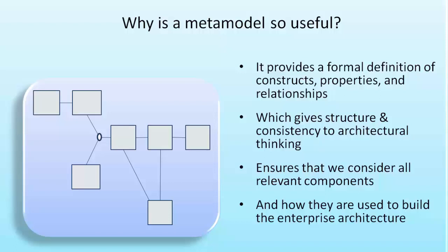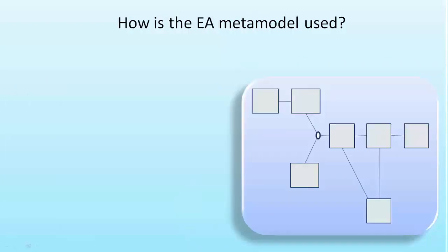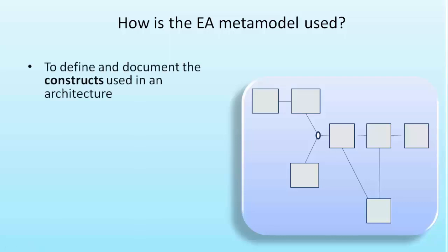The meta model also shows how those components are used to build an enterprise architecture — it shows the allowable ways of configuring and grouping those constructs so that we can create an architecture. Once we've got an enterprise architecture meta model, how do we actually use it? Firstly, we use it to define and document the constructs that we're going to need and use in the enterprise architecture. Any type of construct, any type of relationship that we need in the architecture should be documented in the enterprise architecture meta model.